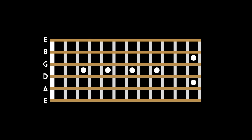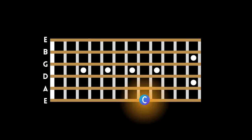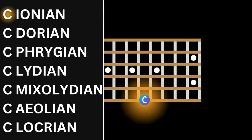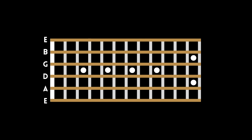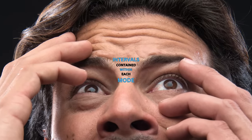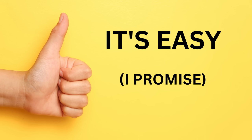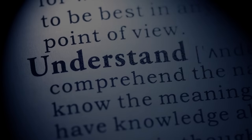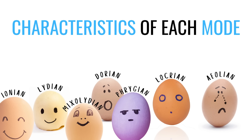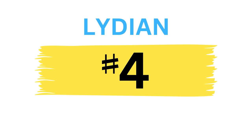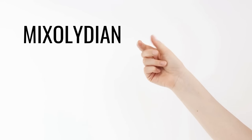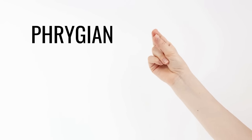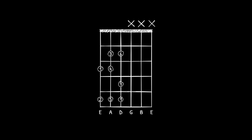To view modes in parallel, you will want to play each mode from the same starting note or tonic — so C Ionian, C Dorian, C Phrygian, C Lydian, C Mixolydian, C Aeolian, and C Locrian. To do this, you will have to be aware of the intervals contained within each mode. Using this method, you will have a far greater understanding of the characteristics of each mode and what notes you might want to highlight to truly capture the sound of each mode, and you'll instantly be able to play any mode without having to work out which major scale it belongs to first.